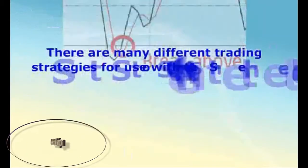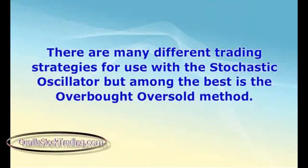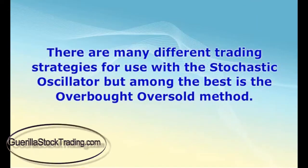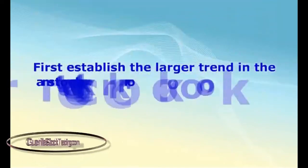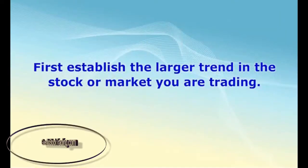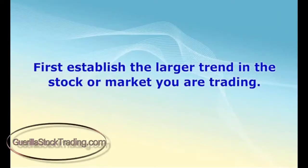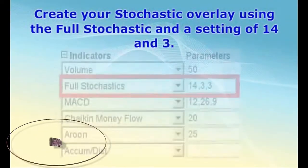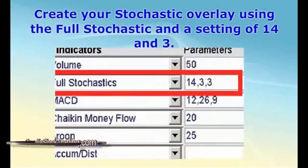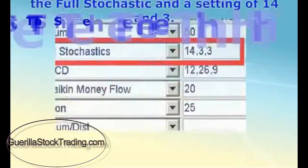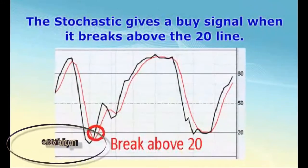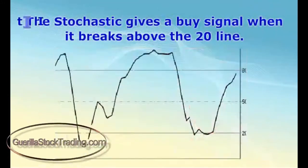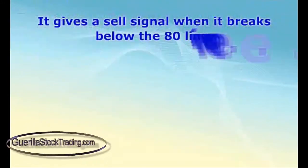There are many different trading strategies for use with the stochastic oscillator, but among the best is the overbought/oversold method. First, establish the larger trend in the stock or market you are trading. Create your stochastic overlay using a full stochastic and a setting of 14 and 3. The stochastic gives a buy signal when it breaks above the 20 line, and a sell signal when it breaks below the 80 line.